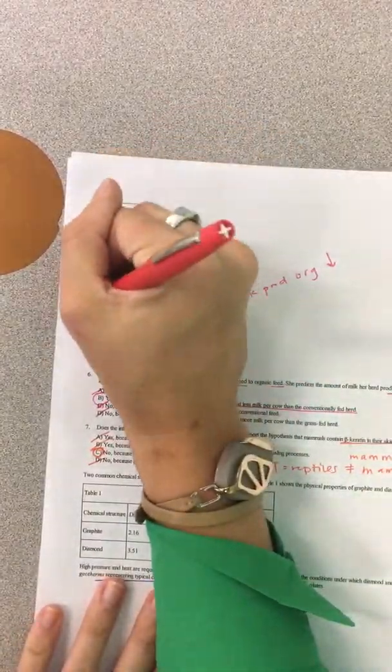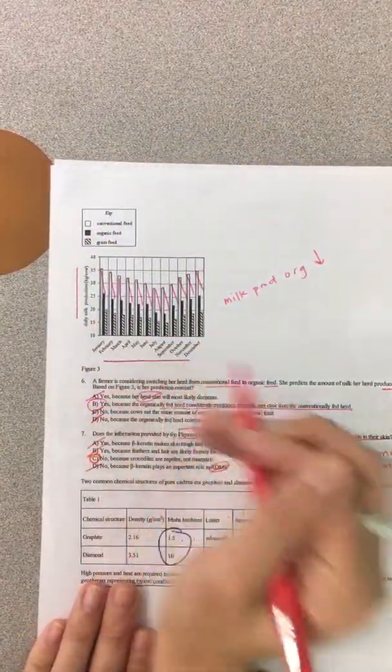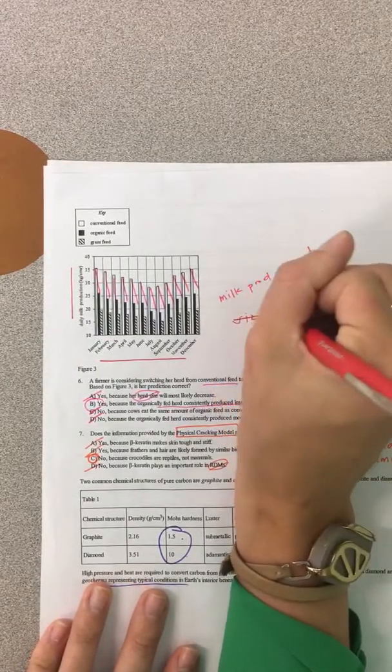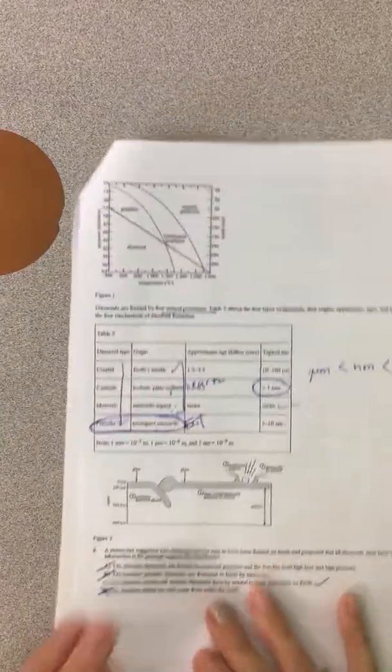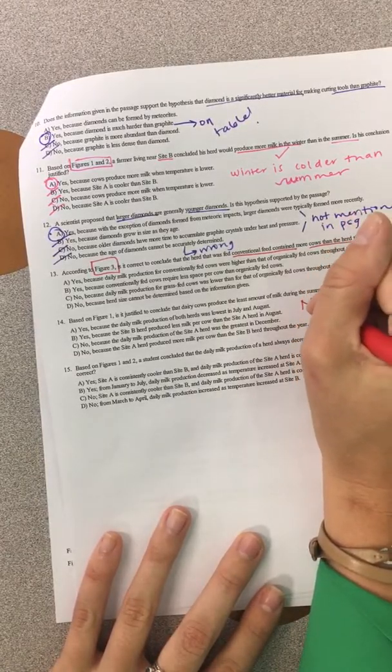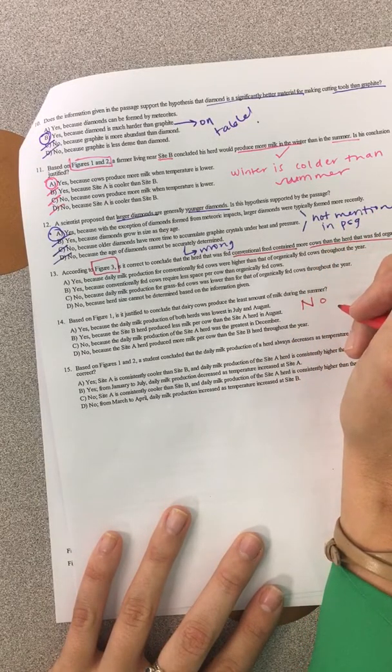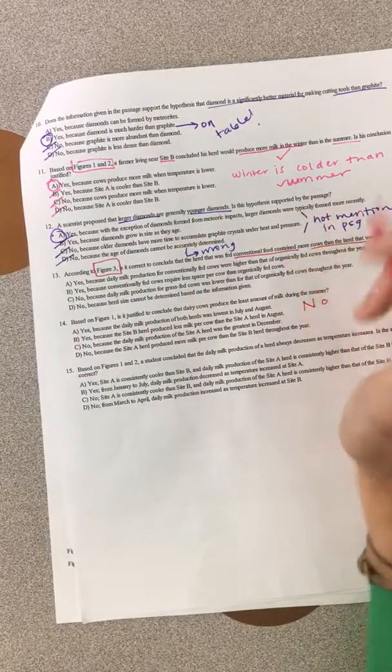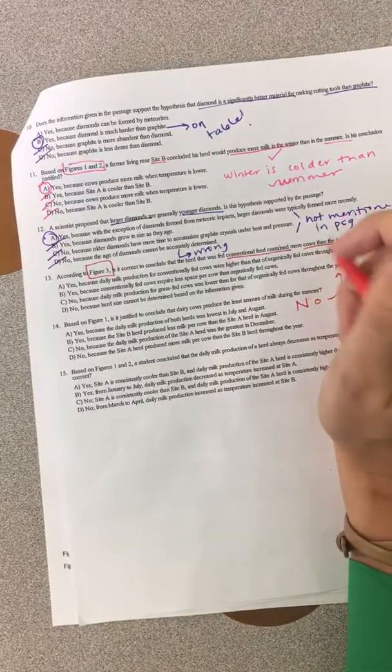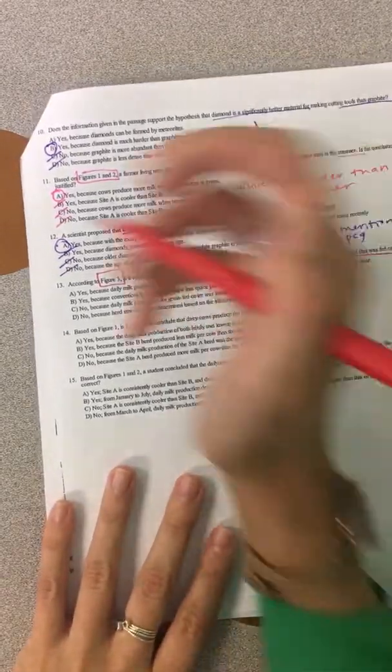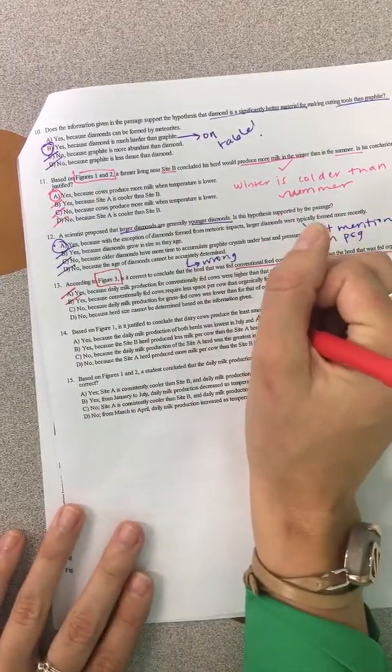Now, this tells us daily milk production and it tells us the month. Does it ever tell us the size of the herd? No. So. For fourteen, no. Right? Because oh wait, I'm up here. Whoopsies. Okay, so for question thirteen, it's going to be a no question because it never mentions size.